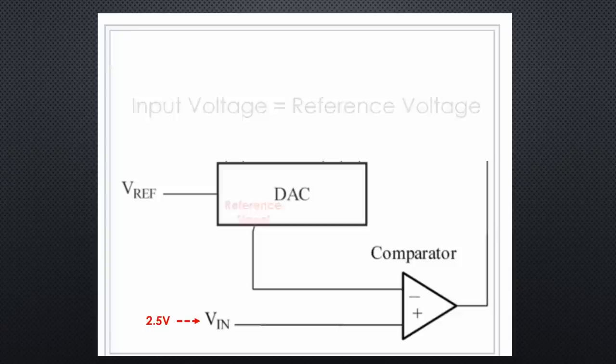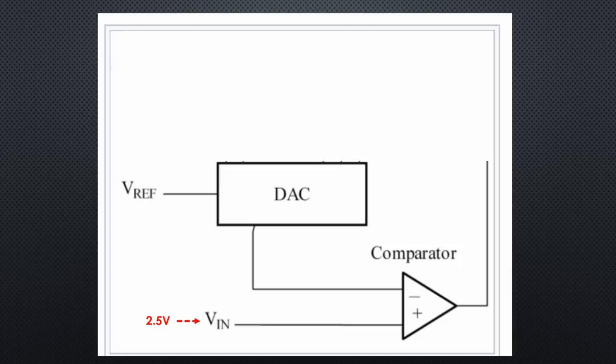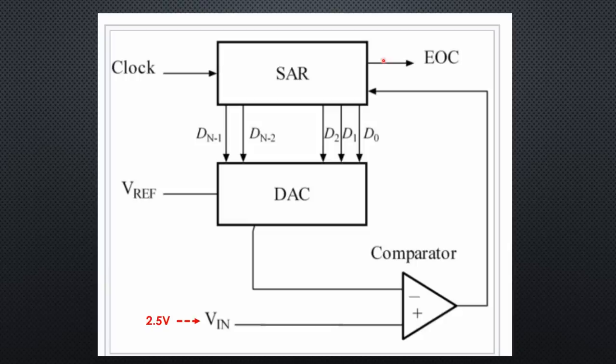If we use a DAC to create the reference voltage, we know, of course, which output voltage it creates because we apply the digital value at its input. We just have to transfer this value to the output pins and ready is our ADC. Nearly.